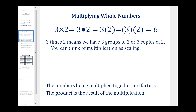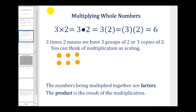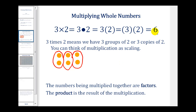3 times 2 means we have 3 groups of 2, or 3 copies of 2. You can also think of multiplication as scaling. If we have 3 groups of 2 — a 1st group of 2, a 2nd group of 2, and a 3rd group of 2 — we can circle these groups. So when we have 3 groups of 2, we have a total of 6.